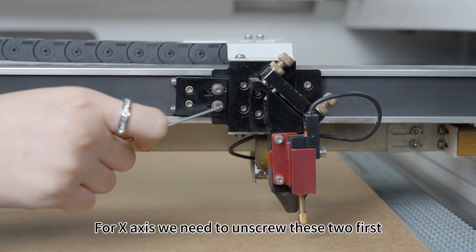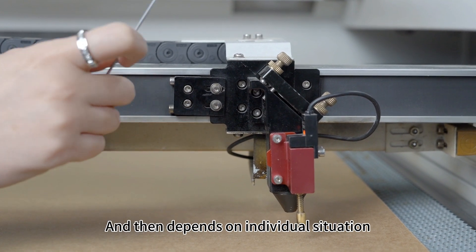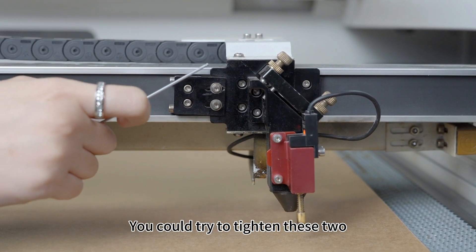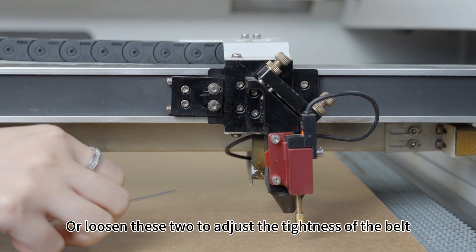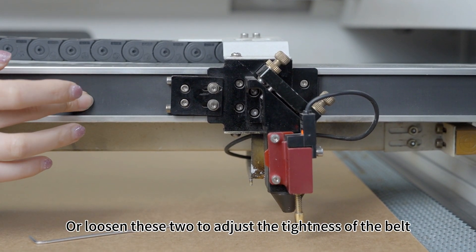For x-axis, we need to unscrew these two first, and then depending on individual situation, you could try to tighten these two or loosen these two to adjust the tightness of the belt.